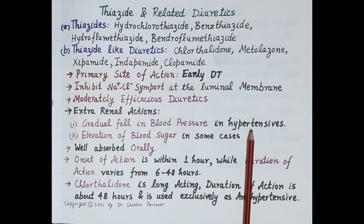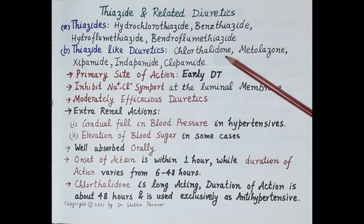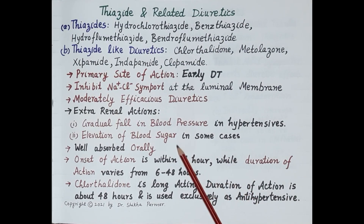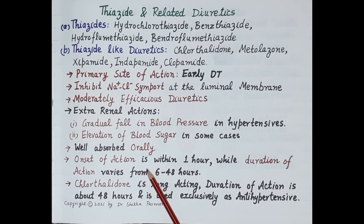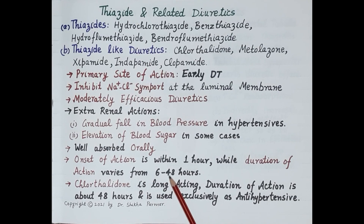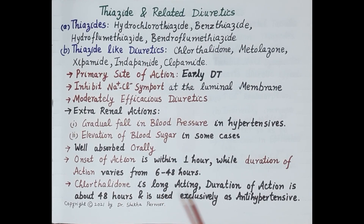Chlorthalidone in particular is a first-line drug in the management of hypertension. These drugs can also elevate blood sugar in some cases due to reduced secretion of insulin, which is probably a consequence of hypokalemia. All these drugs are well absorbed orally with no injectable preparation available. They produce diuretic effect within one hour, with duration of action varying from 6 to 48 hours. Chlorthalidone is long-acting with a 48-hour duration and is used exclusively as an antihypertensive.